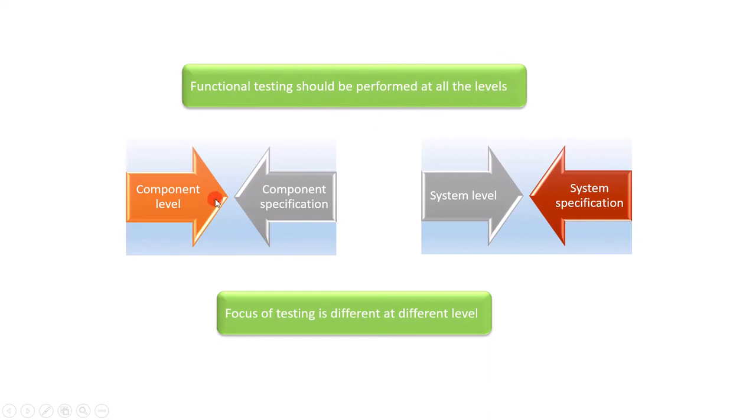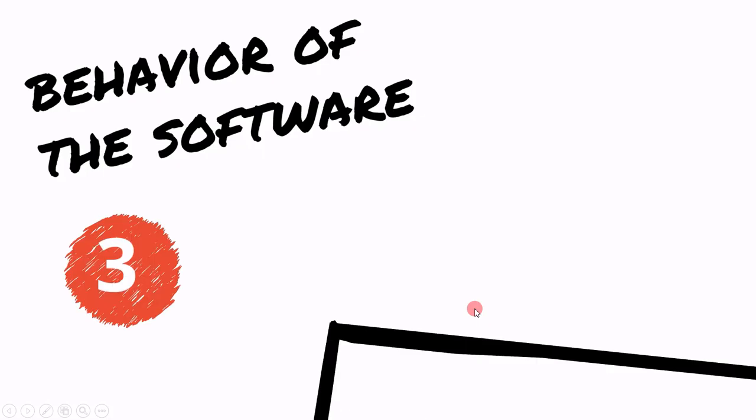For example, if you are at the component level, then the component specification is your requirement. With the help of this specification, we perform functional testing. The key point to remember is the focus of testing is different at different levels.